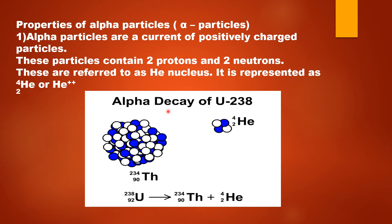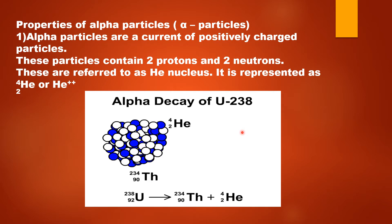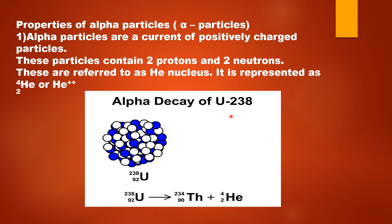Alpha particles are represented as the nucleus of helium — that is, with atomic number 2 and atomic mass number 4. Why? Because the alpha particles are the same as the nucleus of helium. That is the reason why alpha particles are represented as He with atomic number 2 and atomic mass number 4. Alpha particles do not have electrons revolving around the nucleus because alpha particles contain only two protons and two neutrons — they do not contain electrons.